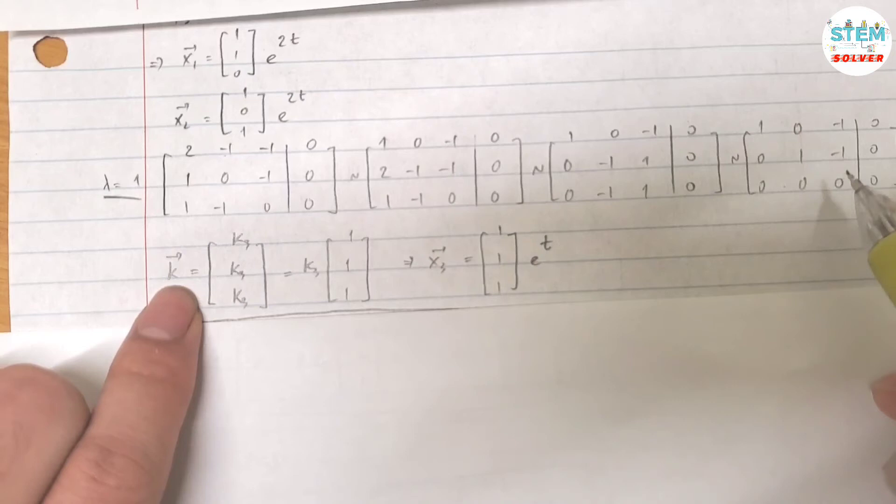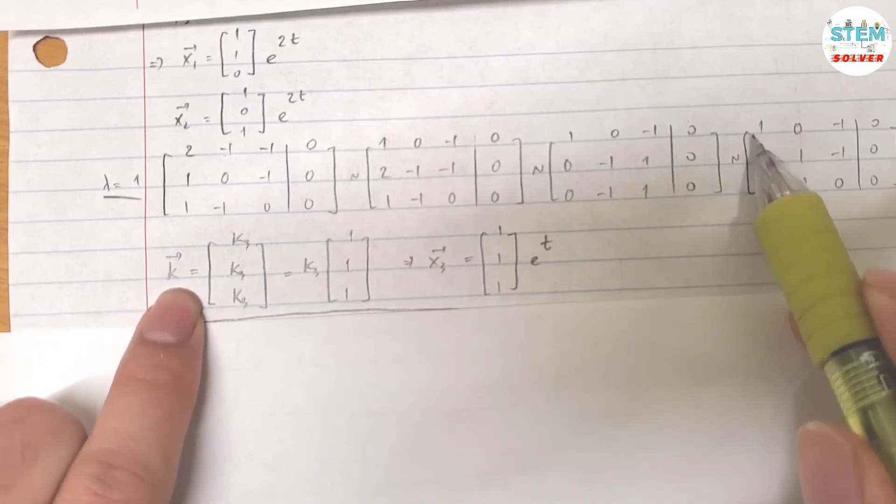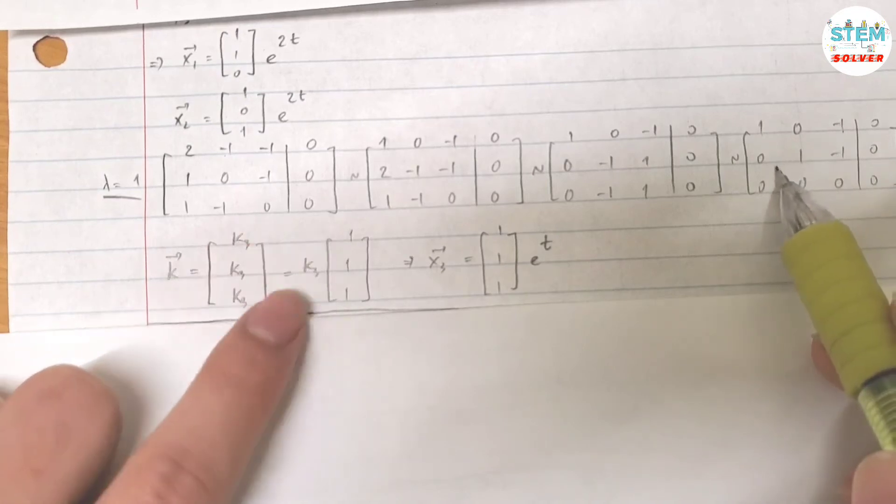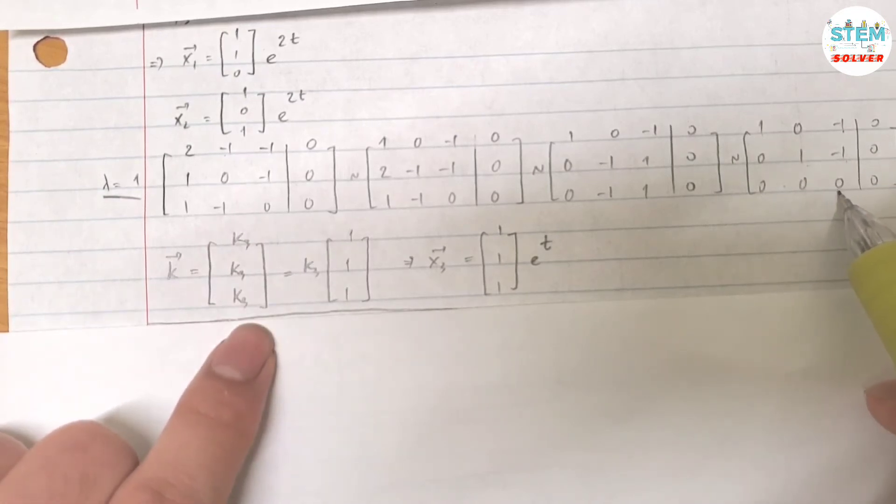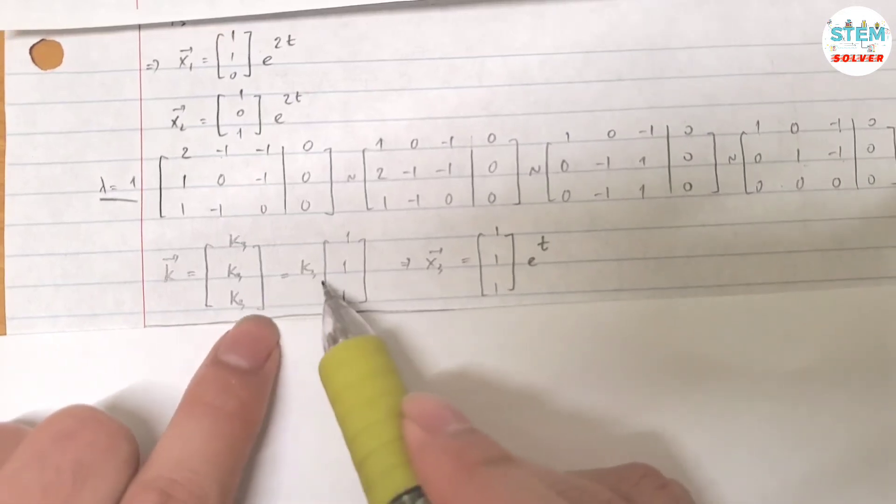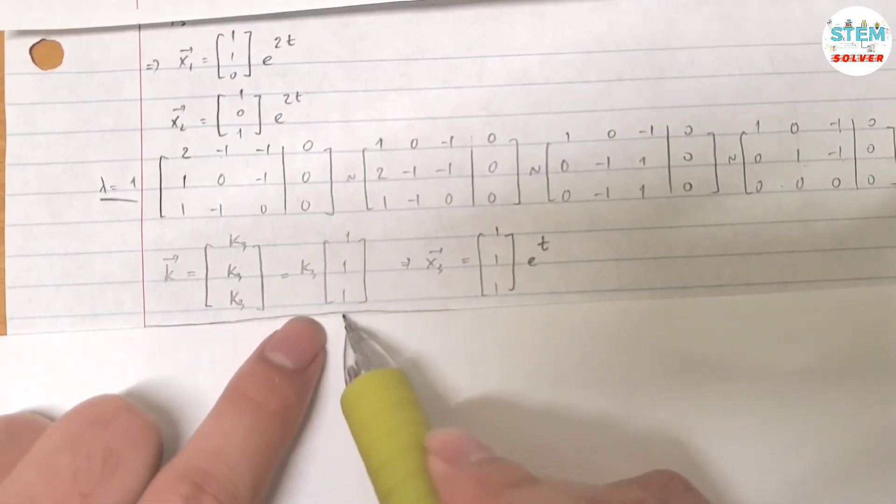You will have a vector k, and for the first row, you have k1 equals k3, k2 equals k3, and k3 it's just k3. So if I factor out k3, I have k3 times vector 1, 1, 1, I mean time matrix 1, 1, 1.